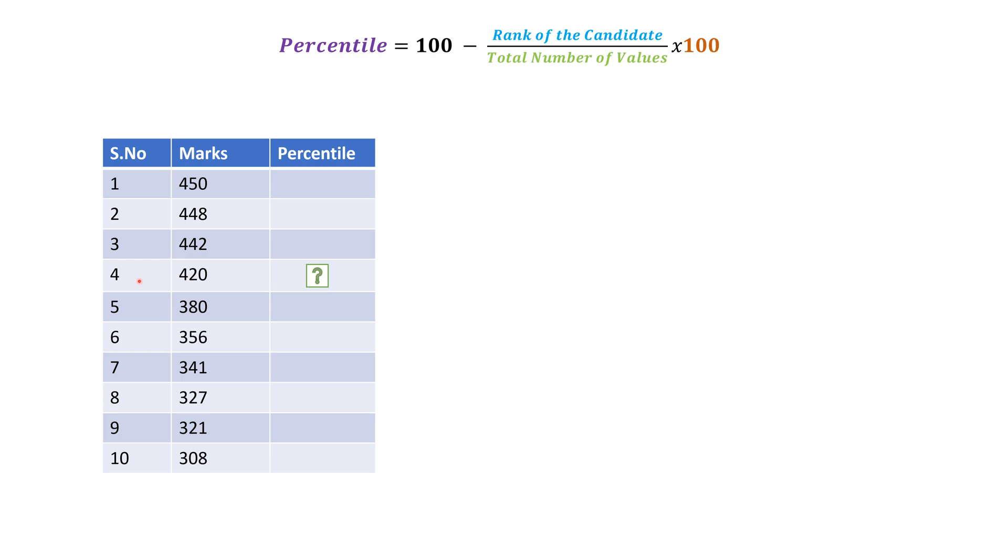Let us start executing the formula. Percentile equals 100 minus fourth rank, so 4 divided by total number of candidates or 10. So 4 divided by 10 into 100, it is going to be 100 minus 0.4 into 100, which is nothing but 100 minus 40.